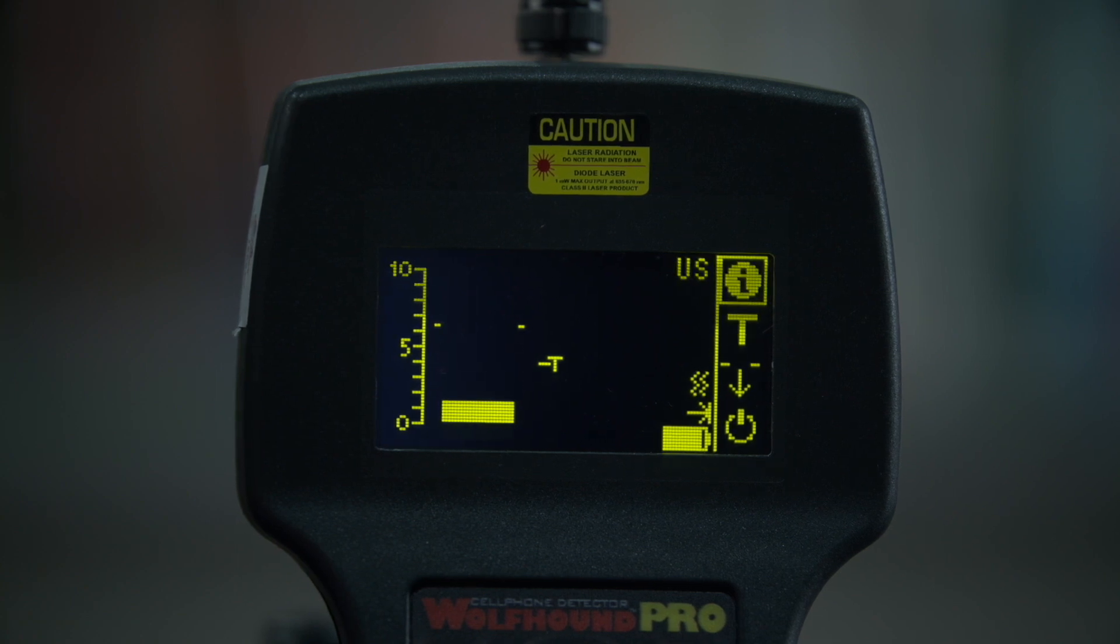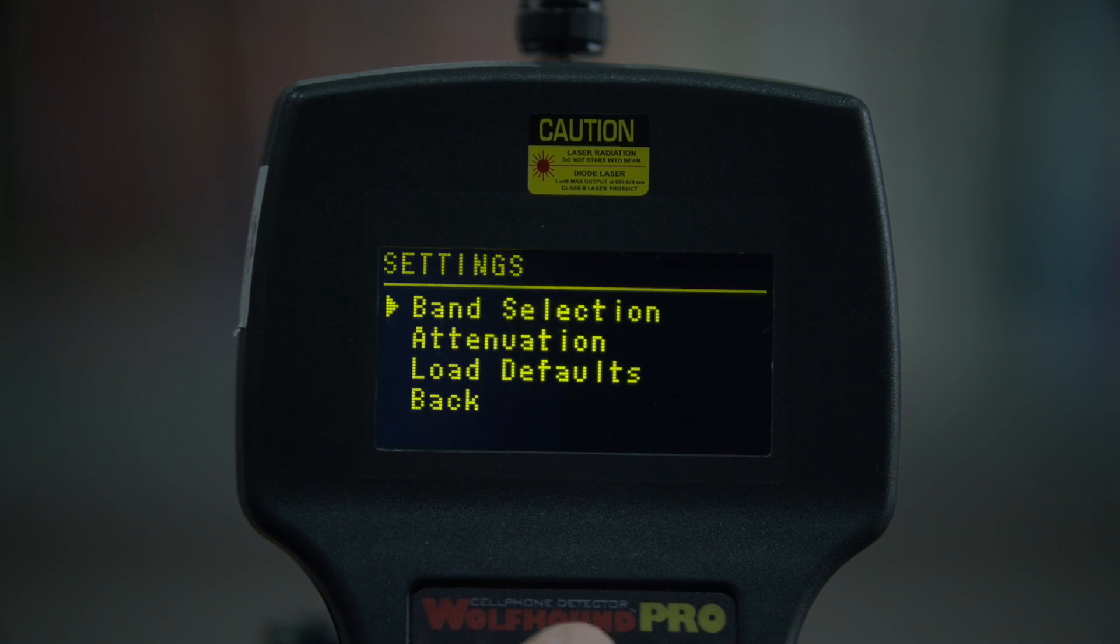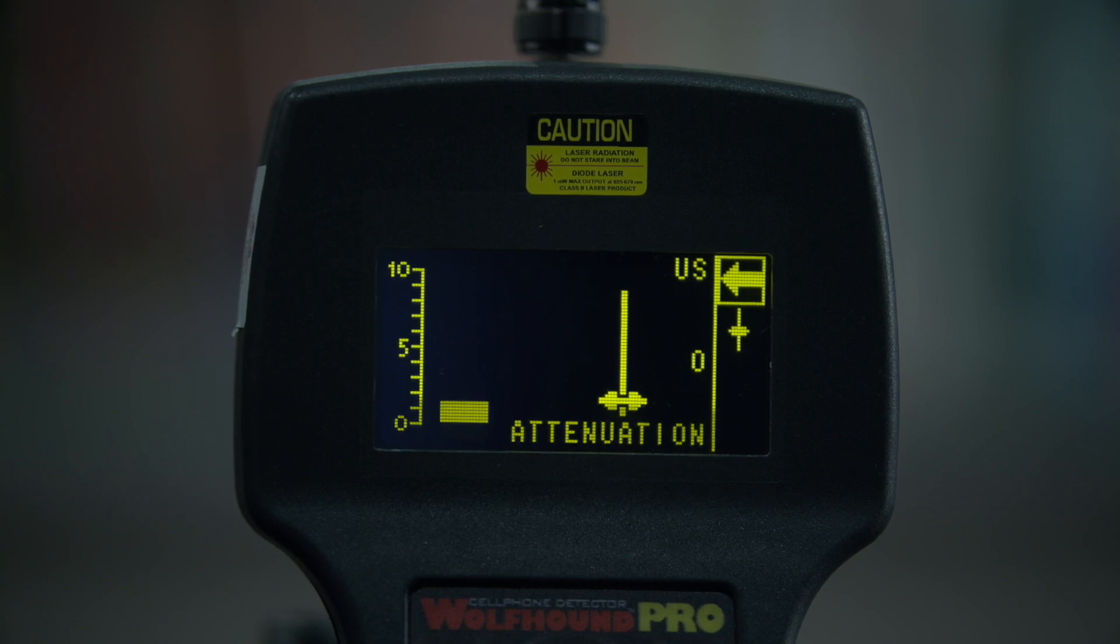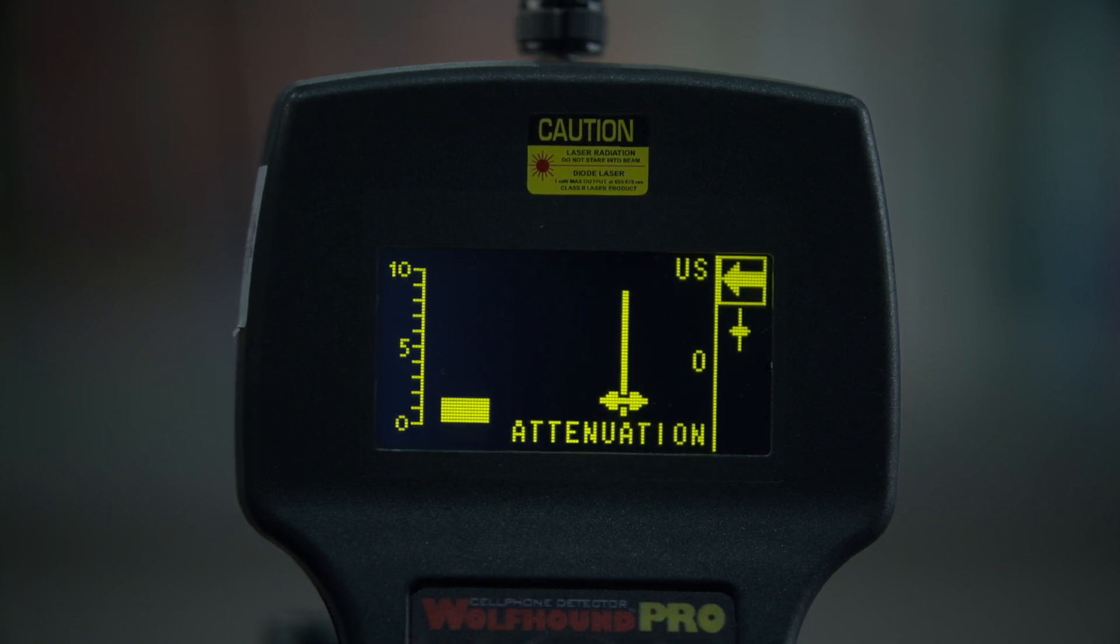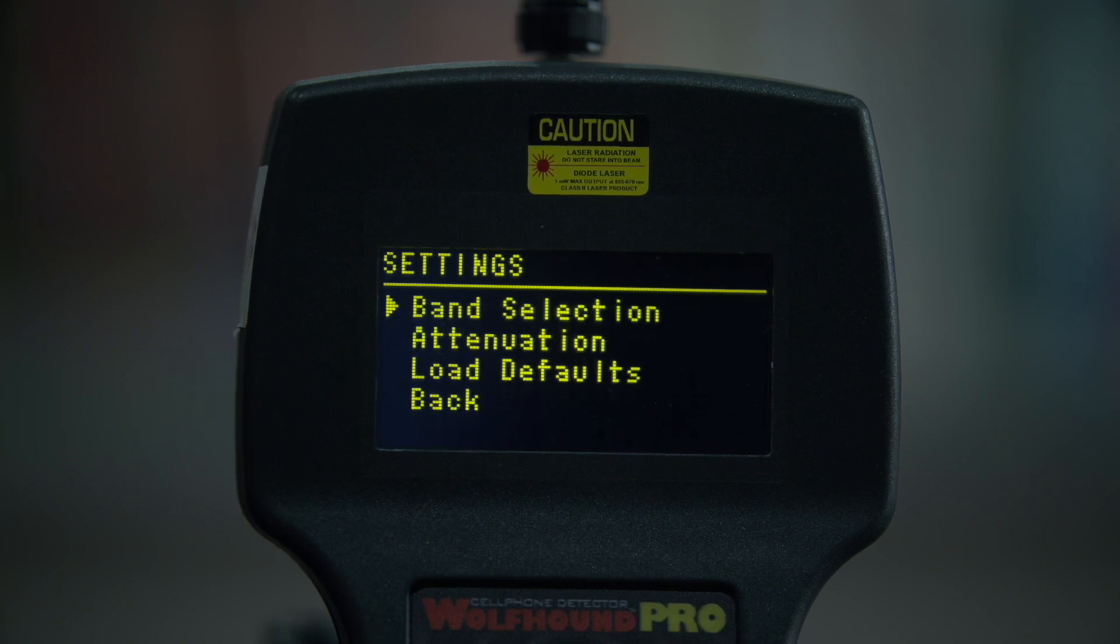To do this, press on the eye icon and scroll down to attenuation. An attenuation level of zero means the device is set to the maximum sensitivity. By setting the attenuation to 28, the Wolfhound Pro will be the least sensitive. Adjust this feature until the Wolfhound Pro no longer detects cell phone activity from these non-secure areas.